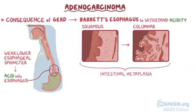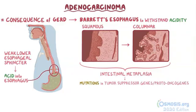Over time, just like with squamous cell carcinoma, mutations might accumulate in either tumor suppressor genes or proto-oncogenes that control the division of these metaplastic cells, ultimately resulting in a malignant tumor.